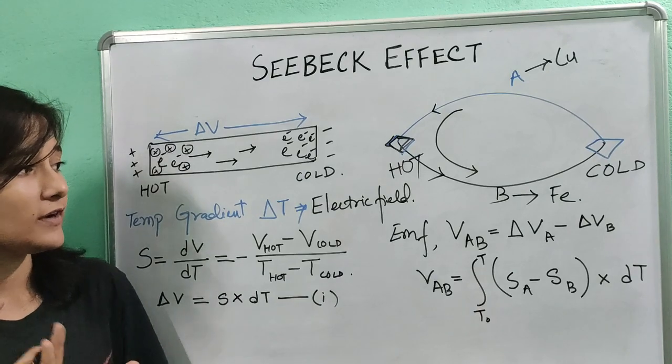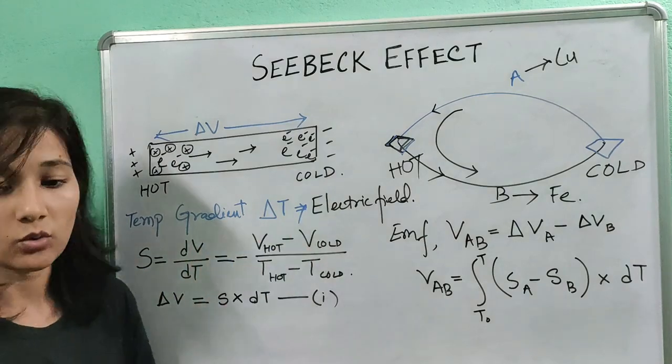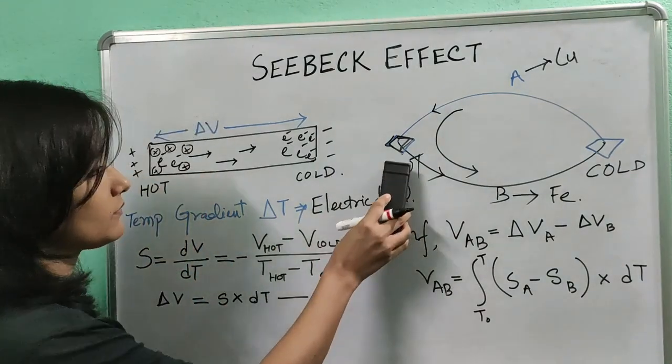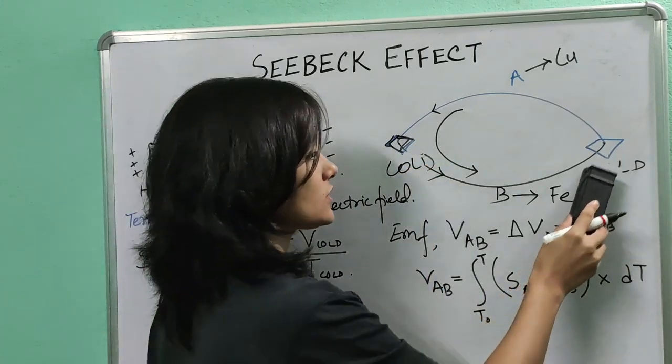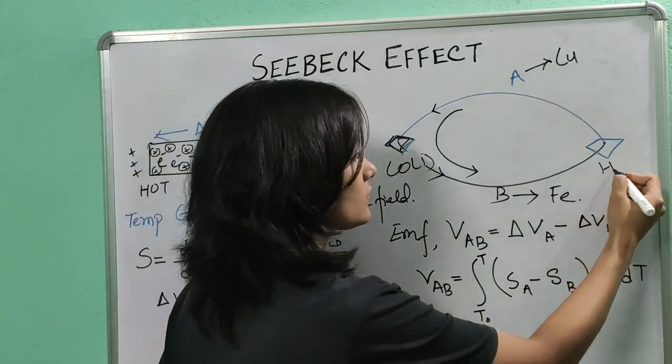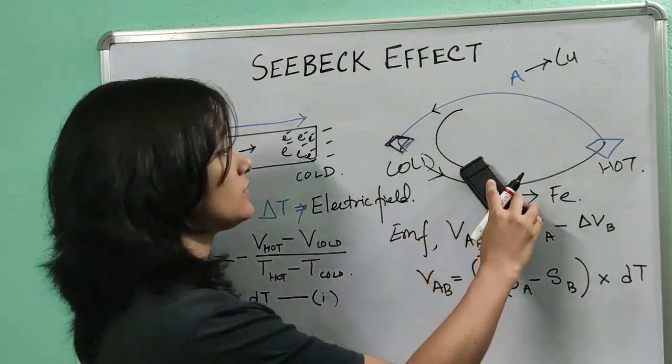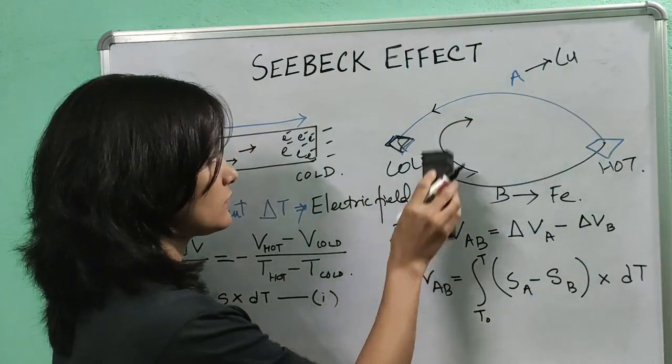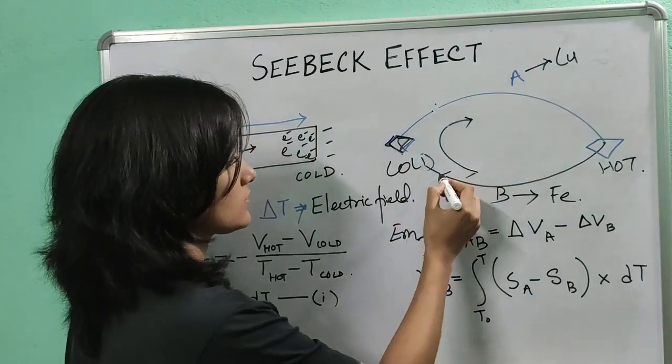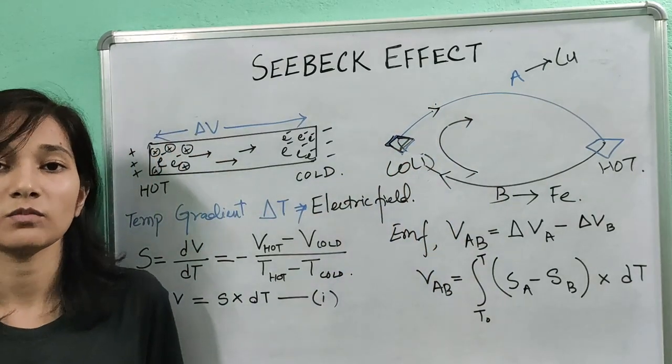A very important property of the Seebeck effect is that if we interchange the hot and the cold junction, that is if I make this junction cold and the cold junction hot, we are interchanging the two junctions, then the direction of the current will reverse. Hence the Seebeck effect is called a reversible process.